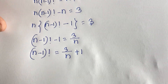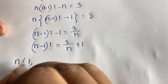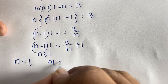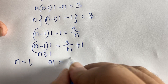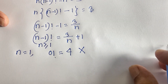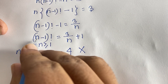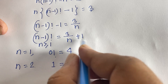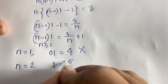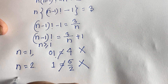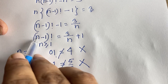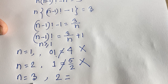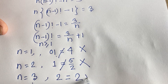So in this case, if n is equal to 1: 1 minus 1 is 0 factorial, which is 1. And 3 over 1 plus 1 is 4. So 1 does not equal 4 — not possible. If n is equal to 2: 2 minus 1 factorial is 1 factorial, which is 1. And 3 divided by 2 plus 1 is 5 over 2. So 1 does not equal 5 over 2 — not possible. If n is equal to 3: 3 minus 1 factorial is 2 factorial, which is 2. And 3 divided by 3 plus 1 is 2. So 2 equals 2. So n is equal to 3 — this is our right option.